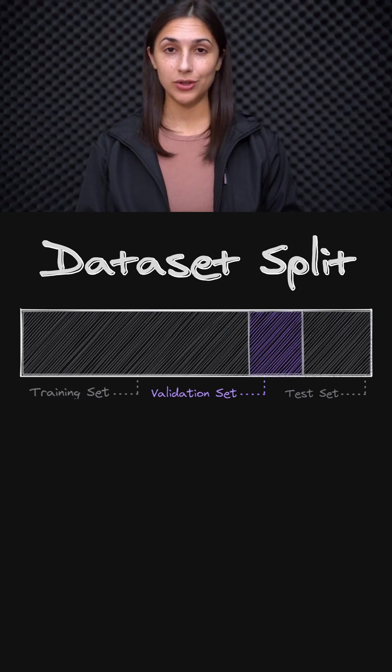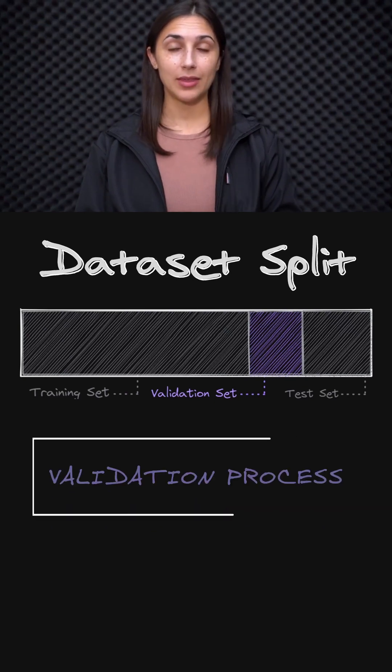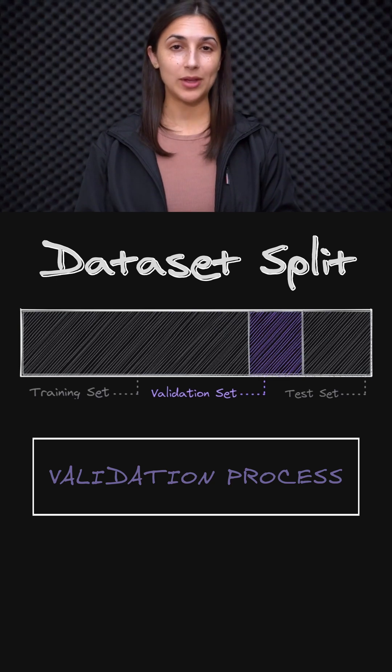So during the training process, we actually also incorporate the validation process. This validation process supplies us with an unbiased evaluation for how well our model is able to generalize on data that it's not being trained on.